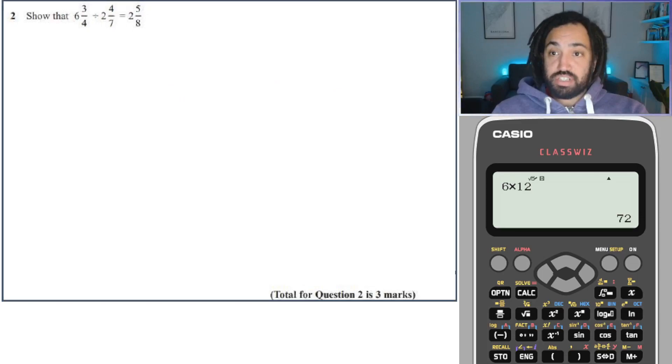And here we have another division. So same thing. We're going to do 4 times 6 is 24. Plus 3 is 27. So that's 27 over 4. We're going to do 7 times 2 is 14. Plus 4 is 18. So that's 18 over 7. Then we're going to keep this one the same. We're going to flip this one over. And we're going to change it into a multiplication.